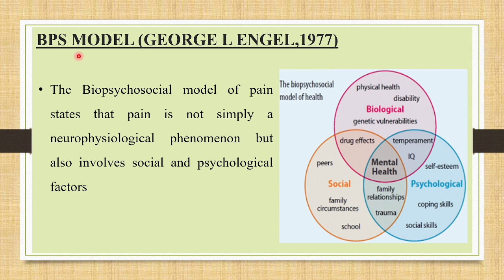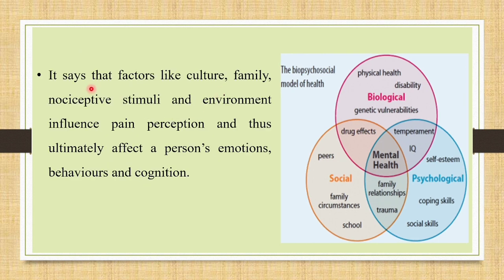The last model is the biopsychosocial model of pain, put forward by George L. Engel in 1977. This model states that pain is not simply a neurophysiological phenomenon but also involves social and psychological factors. It says that factors like culture, family, nociceptive stimuli, and environment influence pain perception, and ultimately affect a person's emotions, behaviors, and cognition.